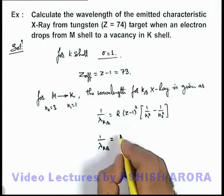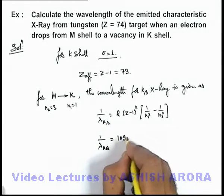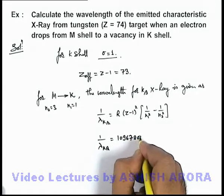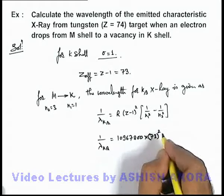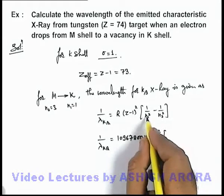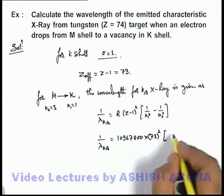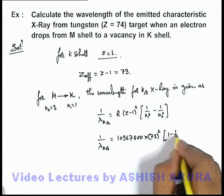Is equal to the value of R, we can write as 10967800, multiplied by 73 square, multiplied by, if we substitute n1 as 1, n2 as 3, this will be 1 minus 1 by 9.